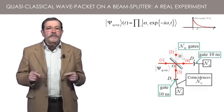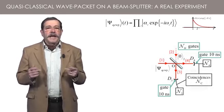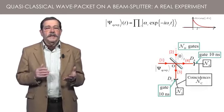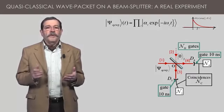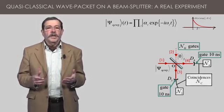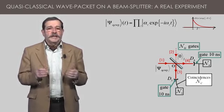The experiment is repeated many times, and data are accumulated. One then obtains the number of gates, the number of single detections in each channel, and the number of coincidences.